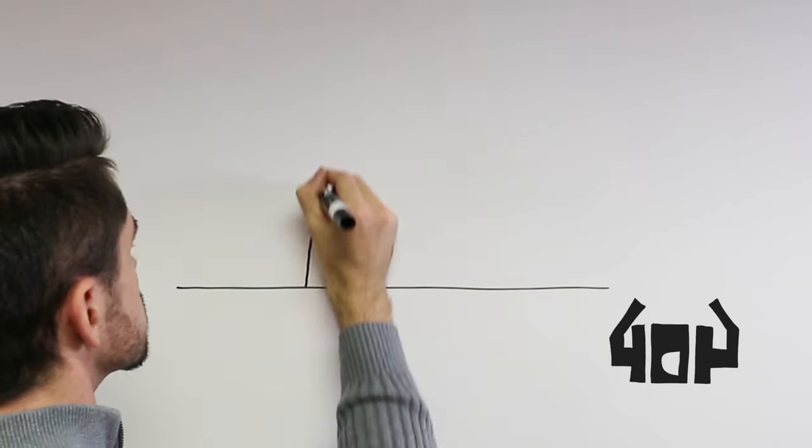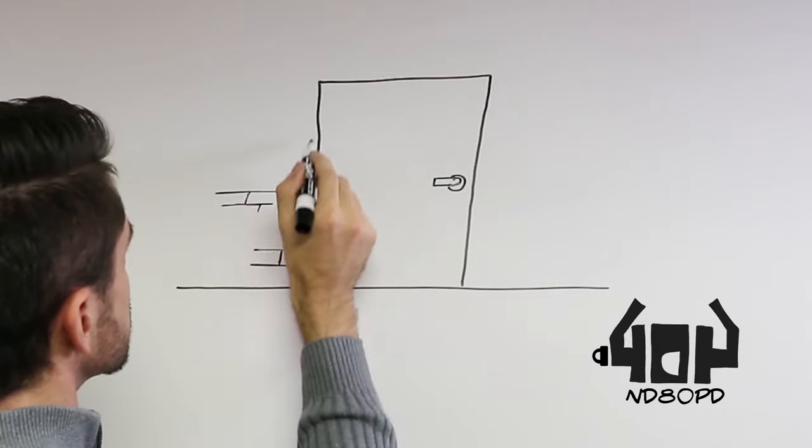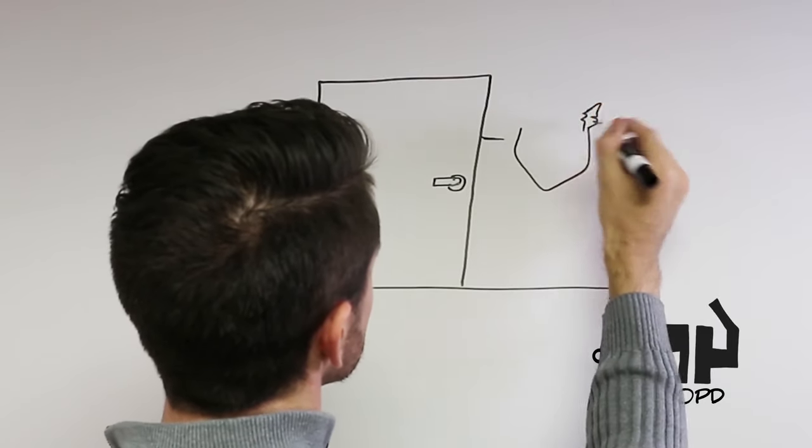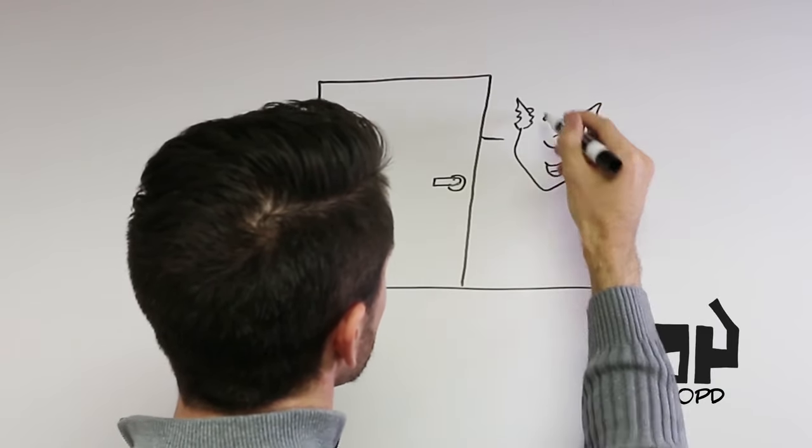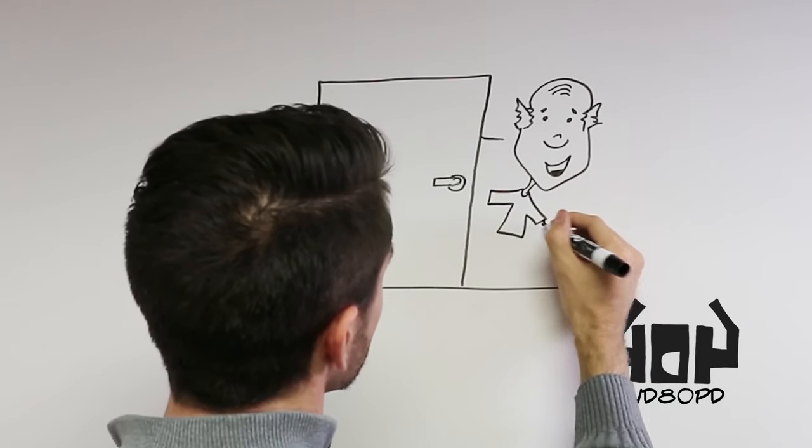Finally, another very common lock function is the storeroom lock. In this case, the outside lever is fixed or rigid, but it has a key. Using the key retracts the latch bolt, momentarily unlocking the door.